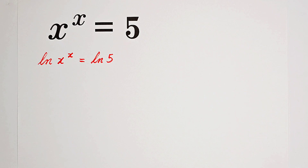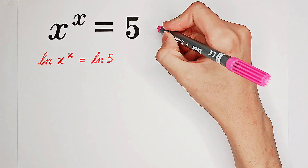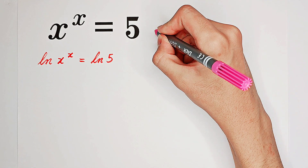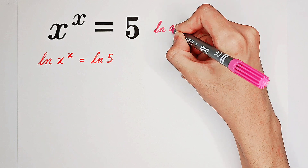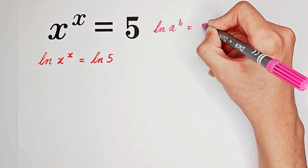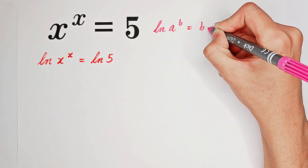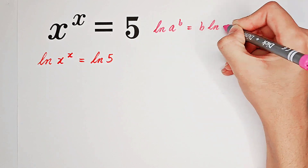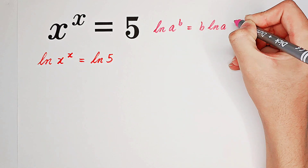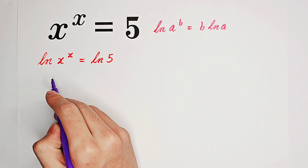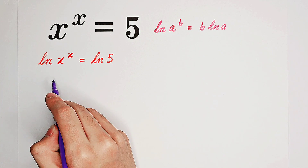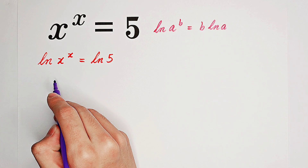Then what shall we do? We have a famous formula: the natural log of a to the power of b equals b times the natural log of a. We can use this formula on our left-hand side.